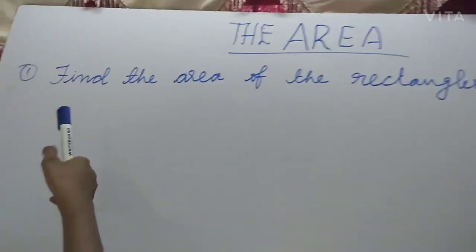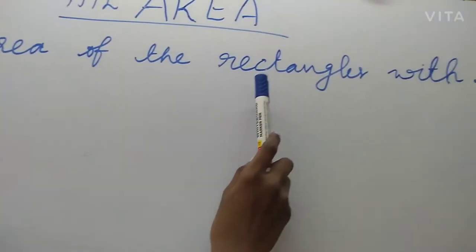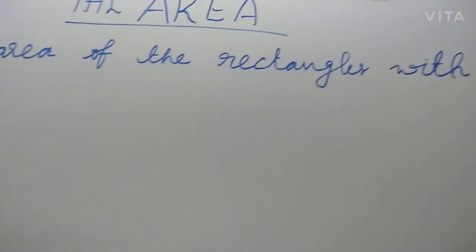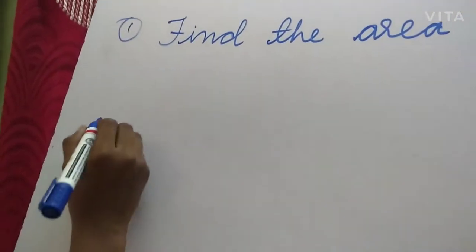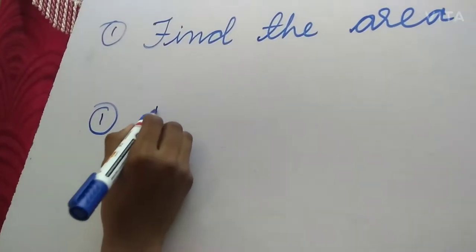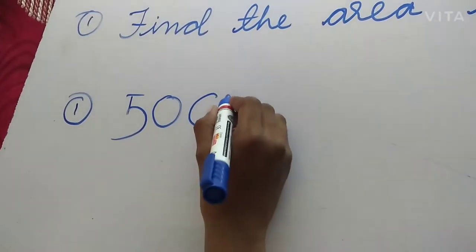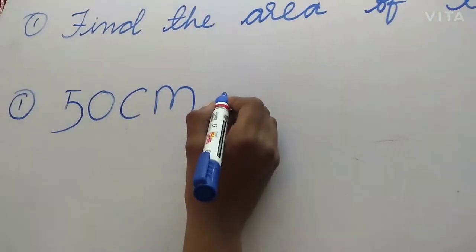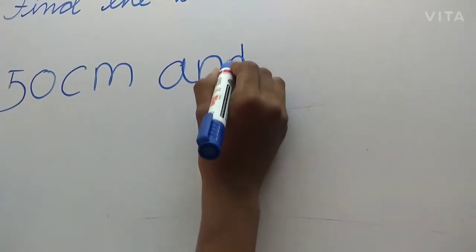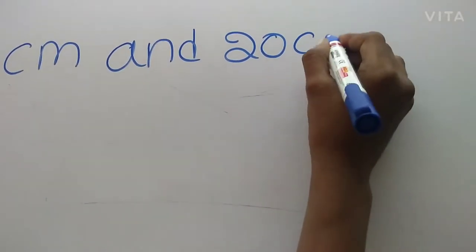First sum: find the area of the rectangles with the given sides. First sum: 50 centimeters and 20 centimeters.